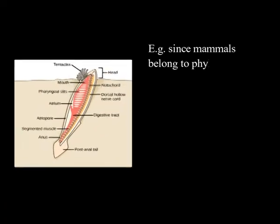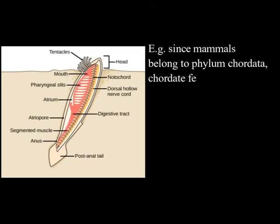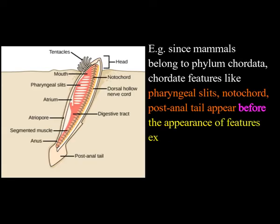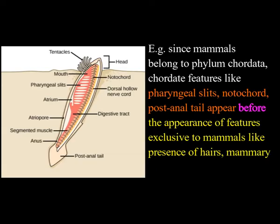appear earlier in development than the special features of the smaller group. For example, since mammals belong to phylum Chordata, chordate features like pharyngeal slits, notochord, and post-anal tail appear before the appearance of features exclusive to mammals like presence of hairs, mammary glands, etc.